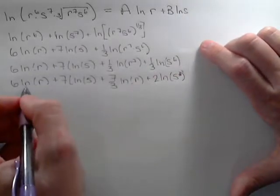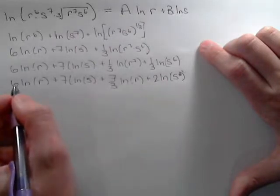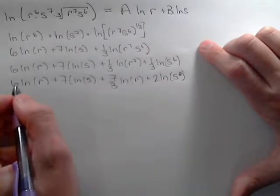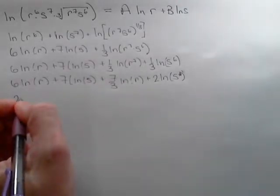Combining like terms for r's, 6 of them plus 7 thirds of them, 6 is the same as 18 thirds plus 7, so 25 thirds.